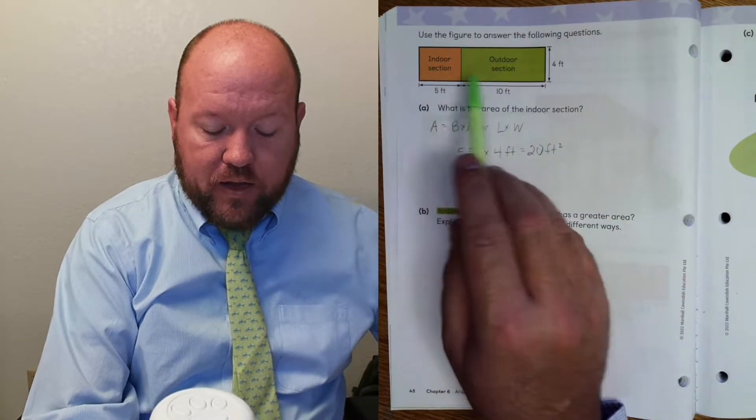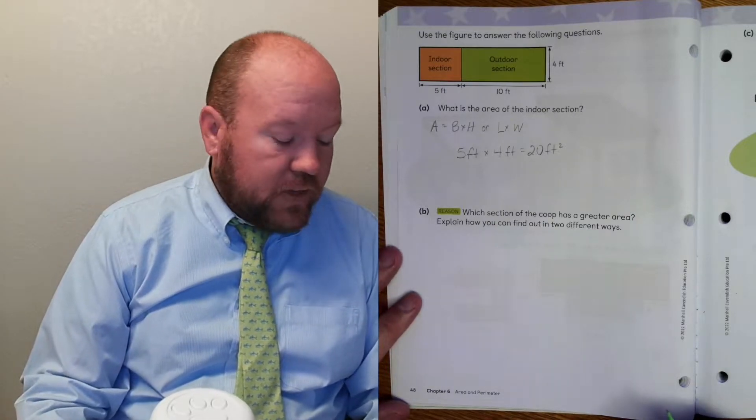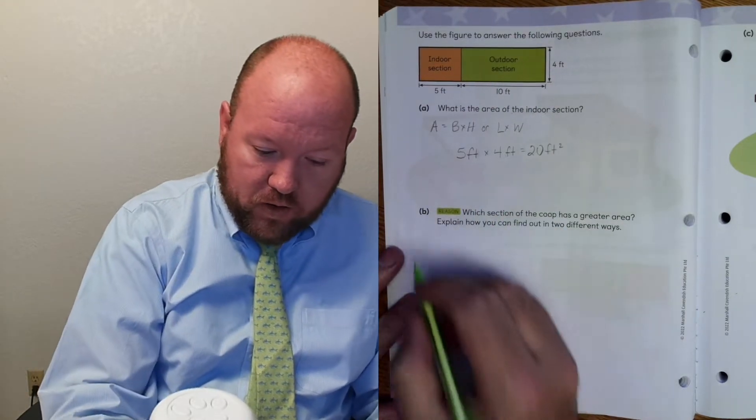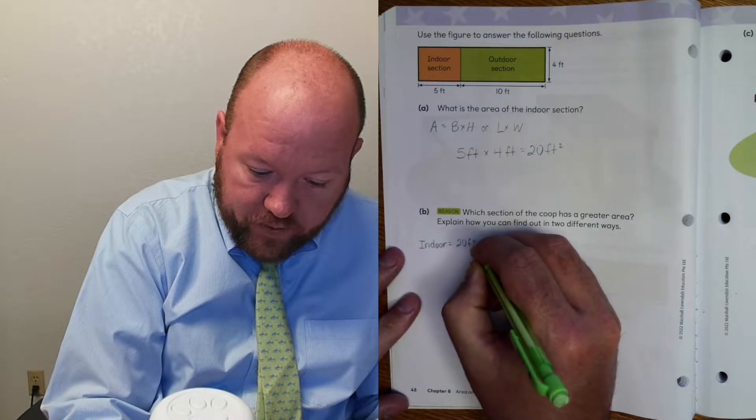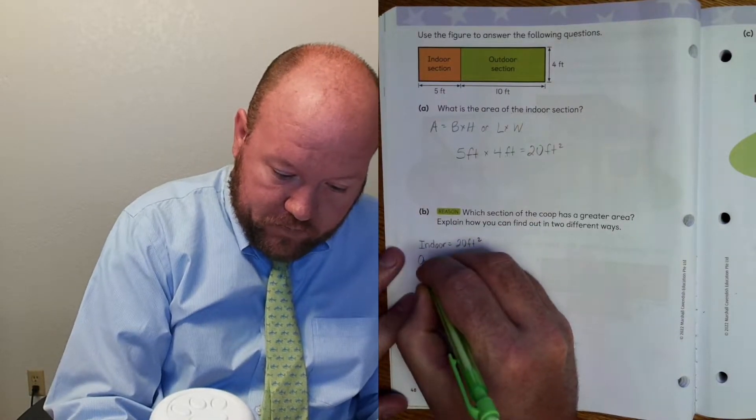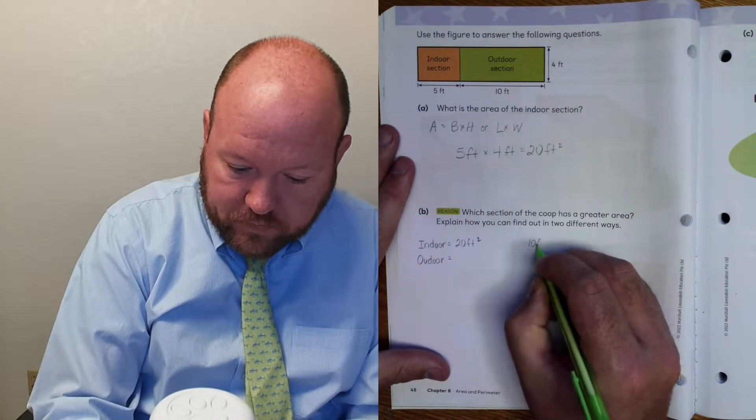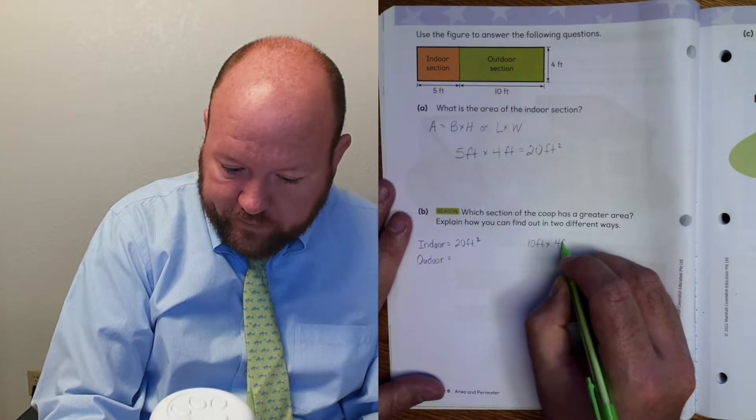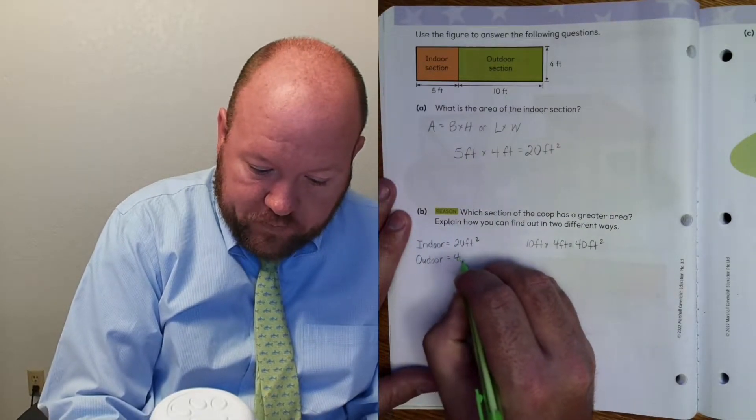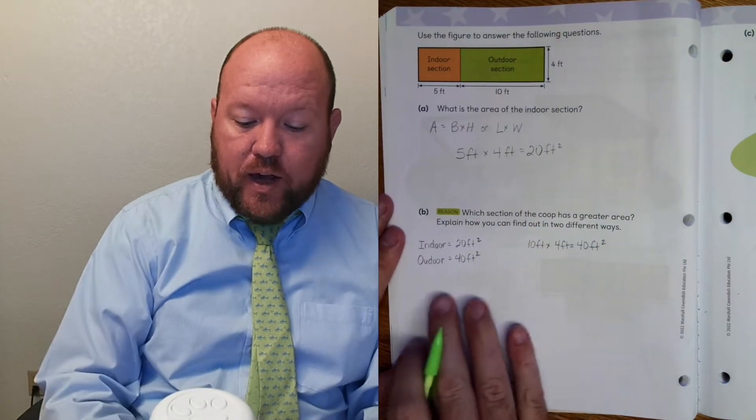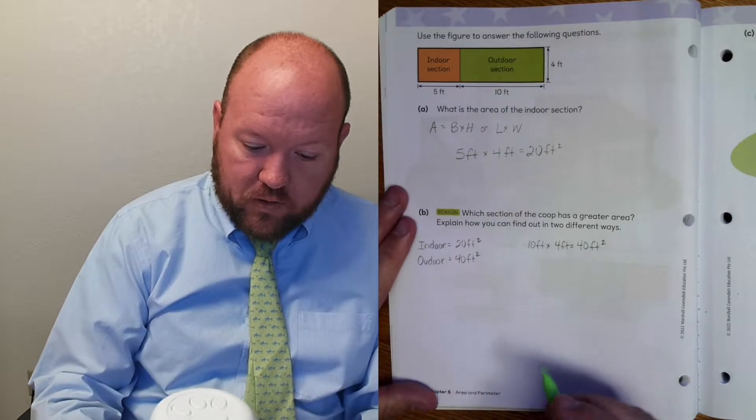Now which section of the coop has the greater area? Explain two ways of finding this out. Which has greater area, the indoor or the outdoor? Well, one way to figure this out is just to take and find the area of the outdoor section. So we know the indoor equals twenty feet squared. So now let's find the outdoor.